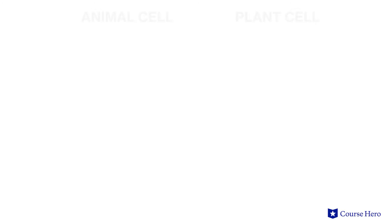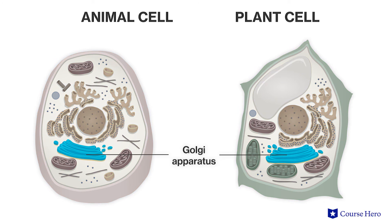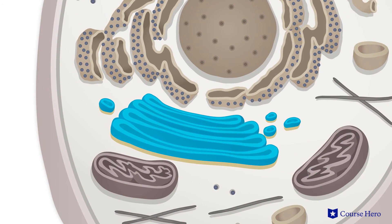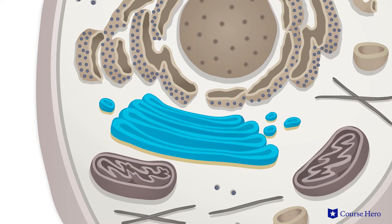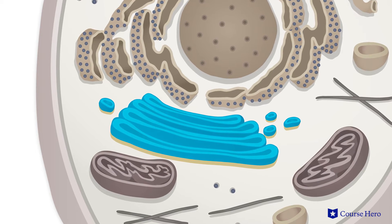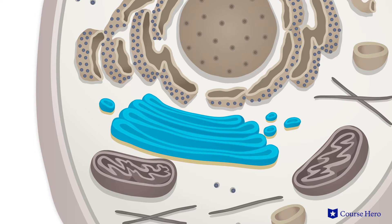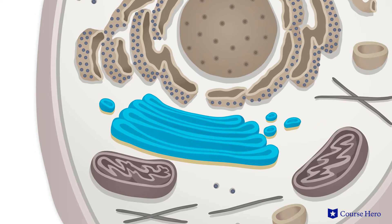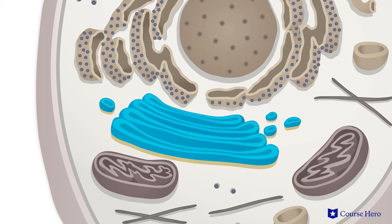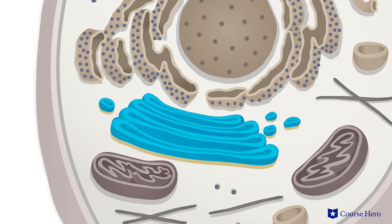Moving on to the Golgi apparatus, which is also part of the endomembrane system, this organelle works very closely with the ER. It receives molecules from the ER and modifies these by attaching chemical markers to them. These markers act as address labels, directing molecules to the correct destination. Because of this function, the Golgi apparatus is sometimes described as being the post office of the cell.